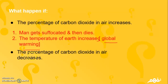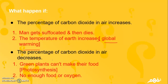What happens if the percentage of carbon dioxide in the air decreases? Green plants cannot make their own food — the photosynthesis process stops. As a result, there will not be enough food or oxygen for respiration.